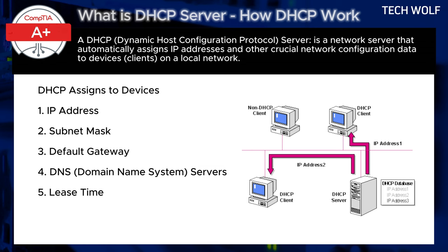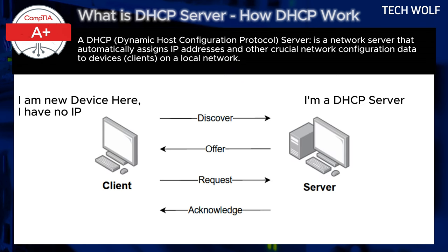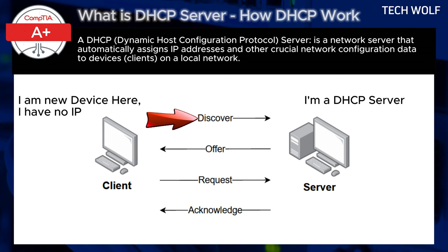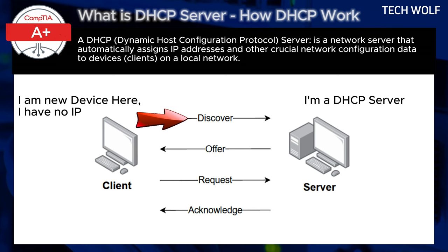How does DHCP work step by step? Step 1 is DHCP Discovery. When a new device, such as a laptop or smartphone, connects to the network, it sends out a DHCP Discover message as a broadcast to locate any DHCP servers. This message is broadcast on the network because the device doesn't yet have an IP address.